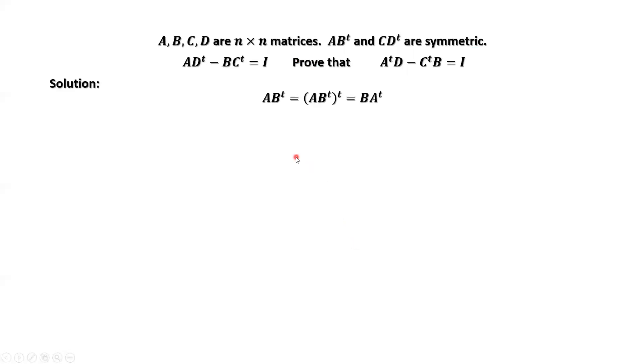From the given condition, A times B transpose is symmetric. What does this mean? This means A times B transpose equals A times B transpose, then transpose.